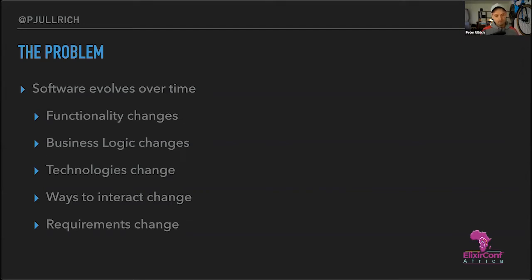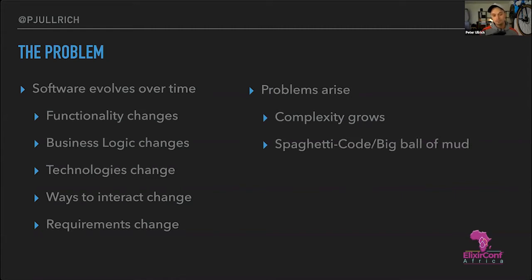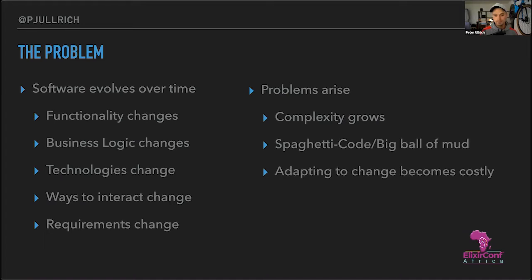All these changes lead to problems. Complexity grows — as you add more code and functionality, your codebase becomes harder to navigate and understand. If you don't manage that complexity well, you end up with spaghetti code or a big ball of mud where everything is connected to everything. You'll have a hard time understanding why changing one part of your codebase breaks another. Adapting to change becomes more costly — writing new features takes longer and more bugs occur.